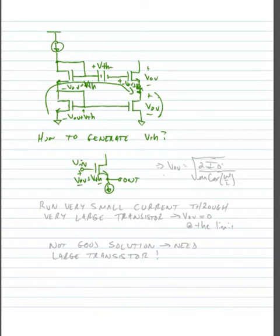So we would see a VTH if we could drive VOV equal to zero. So let's look at how we might drive VOV equal to zero, or at least to a very small value. We know that VOV is equal to the square root of two ID over mu N C aux times W over L. So one way to drive VOV equal to zero, or close to zero, is to run a very small current through a very large transistor.